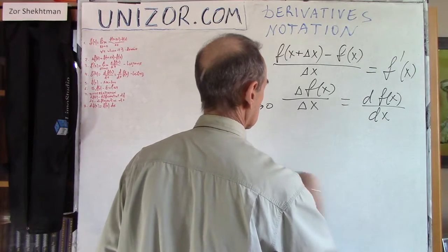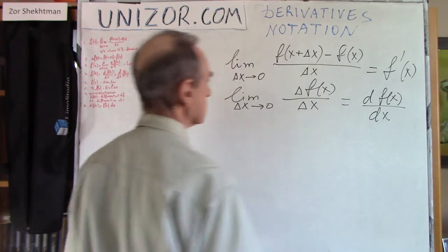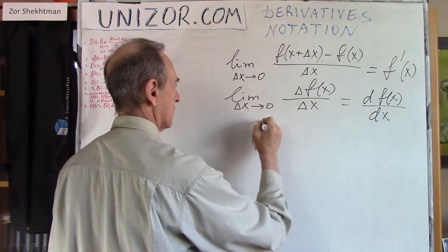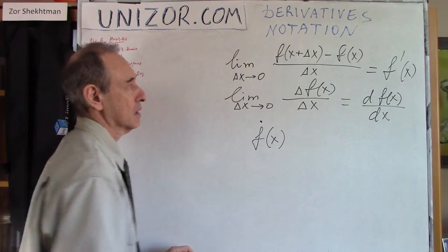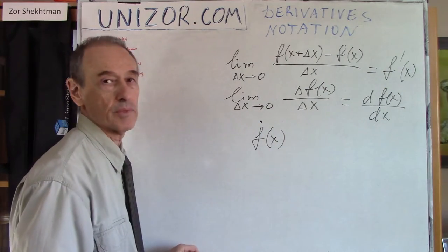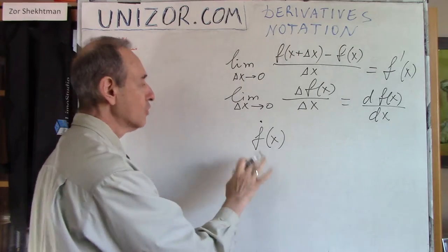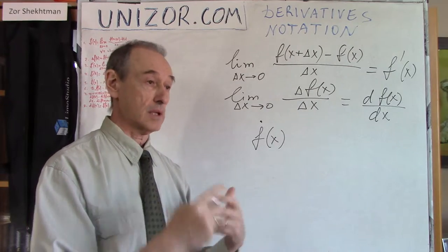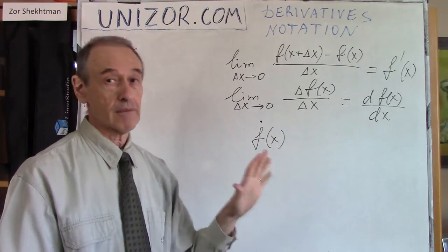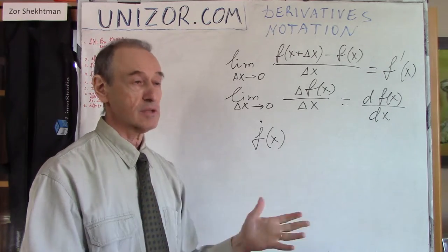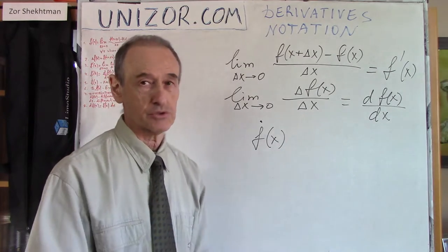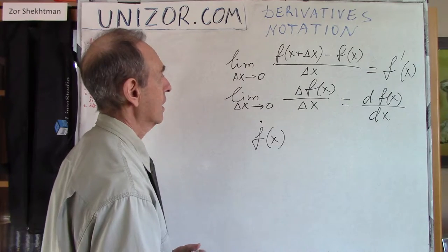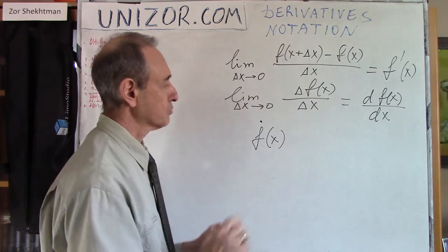Next is Newton — Sir Isaac Newton — who was using a dot on top of the function symbol instead of the prime. We will probably not be using this notation, although in physics and classical mechanics it does have its own usage, traditionally as a respect to Sir Isaac Newton, who basically invented classical mechanics.